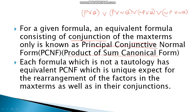PCNF can be obtained for every formula which is not a tautology. By contrast, the Principal Disjunctive Normal Form can be obtained for a formula which is not a contradiction. Each formula which is not a tautology has an equivalent PCNF that is unique, except for the rearrangement of factors.